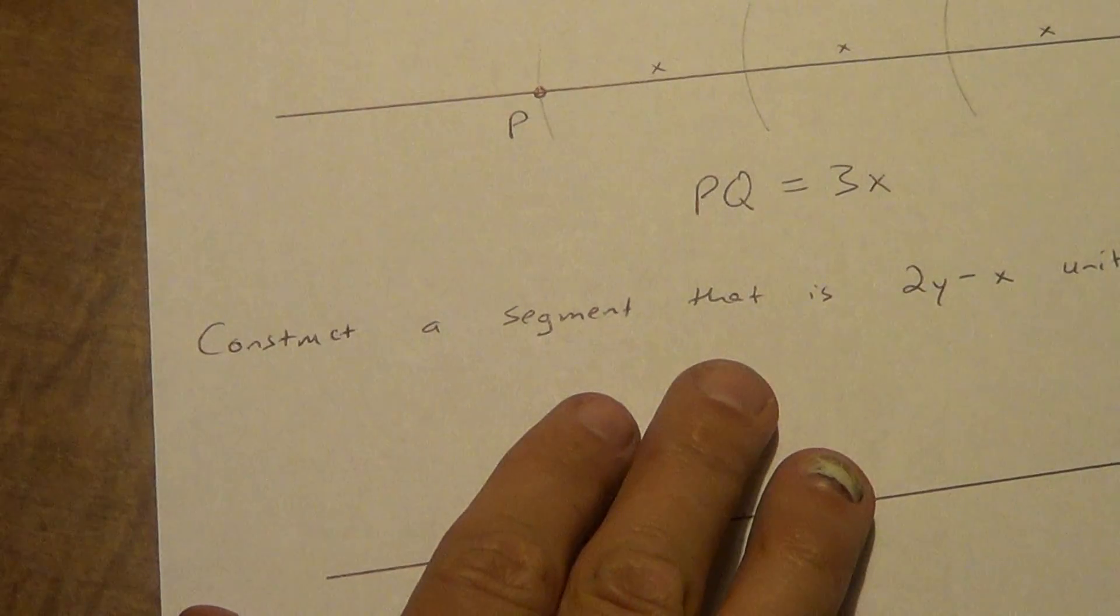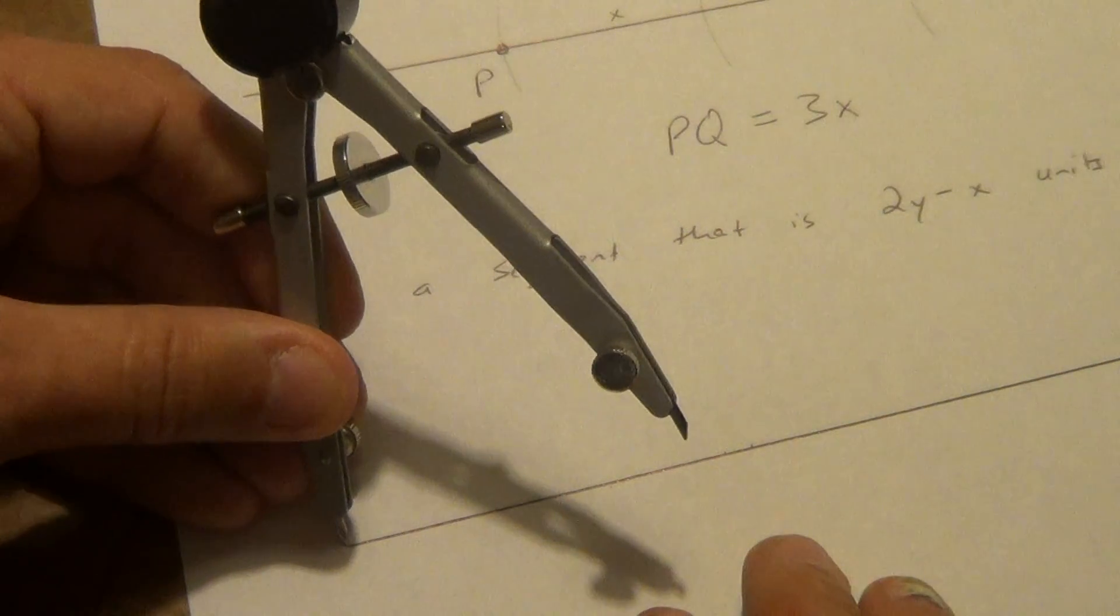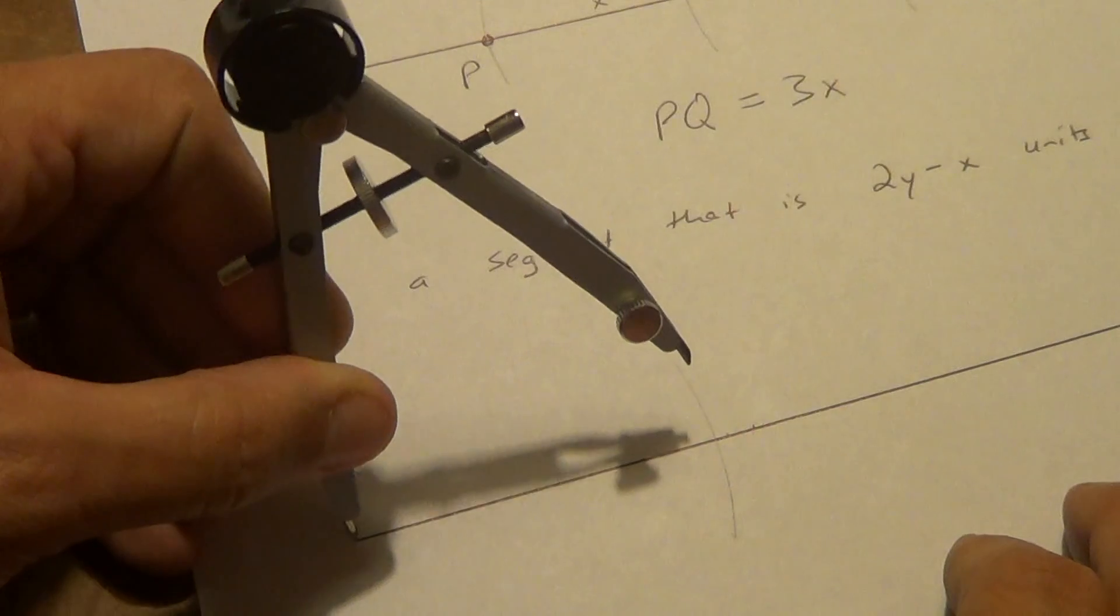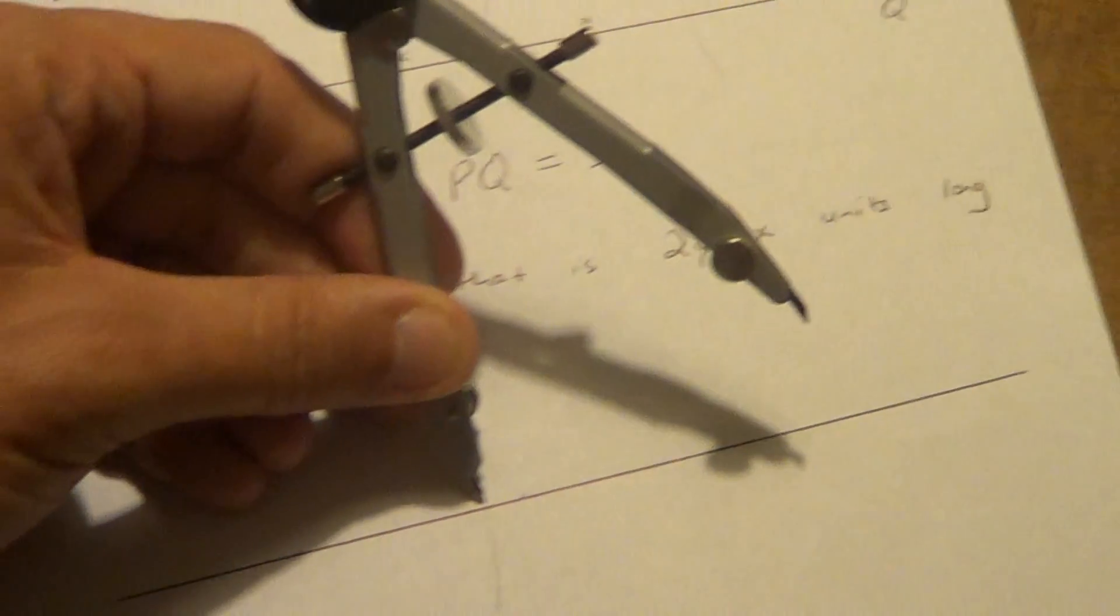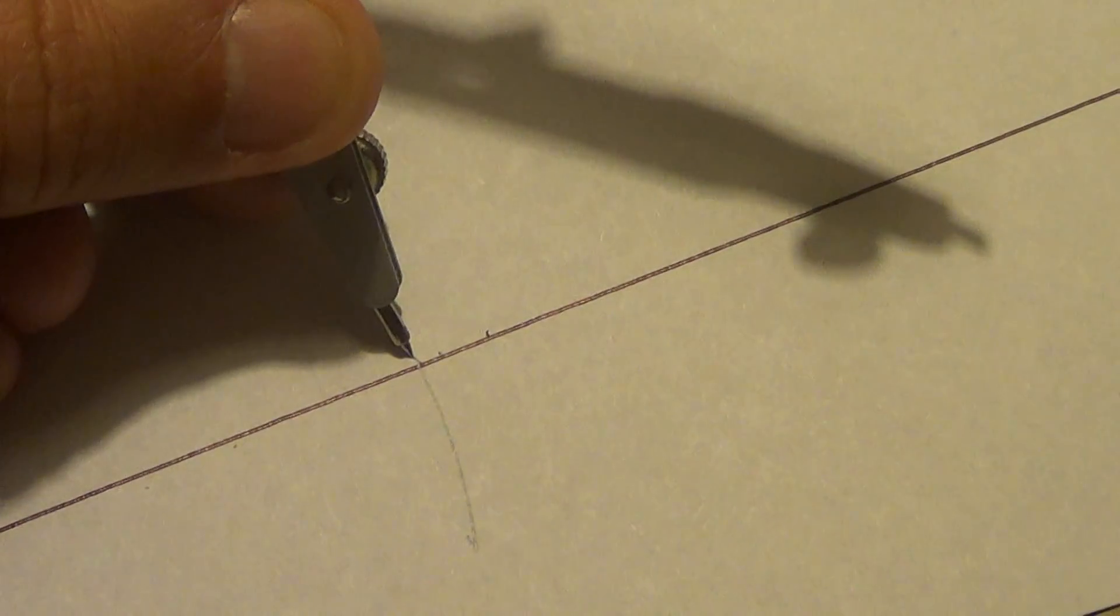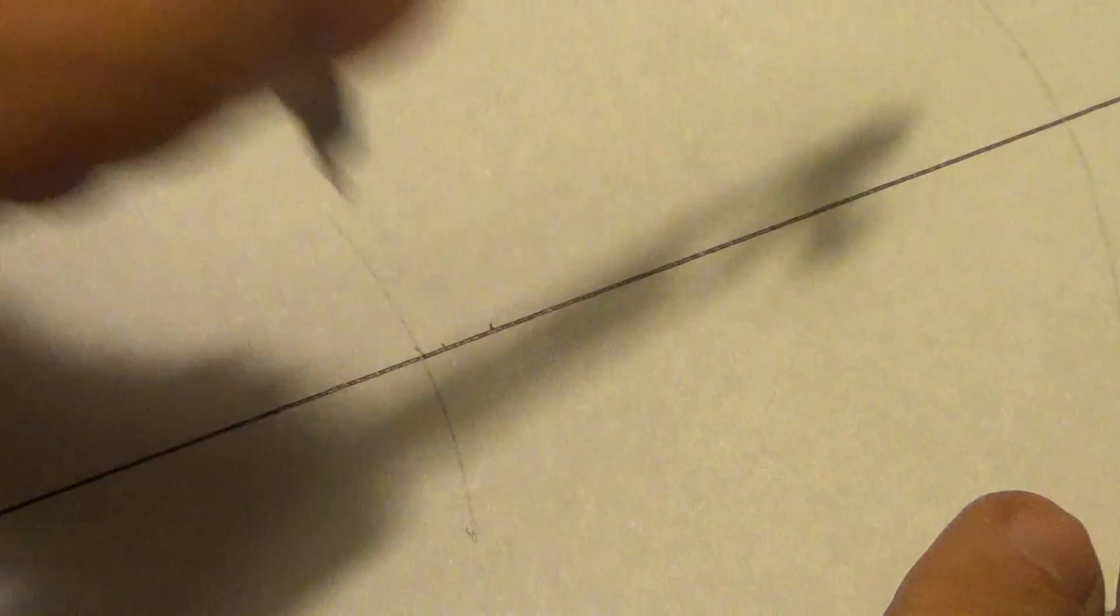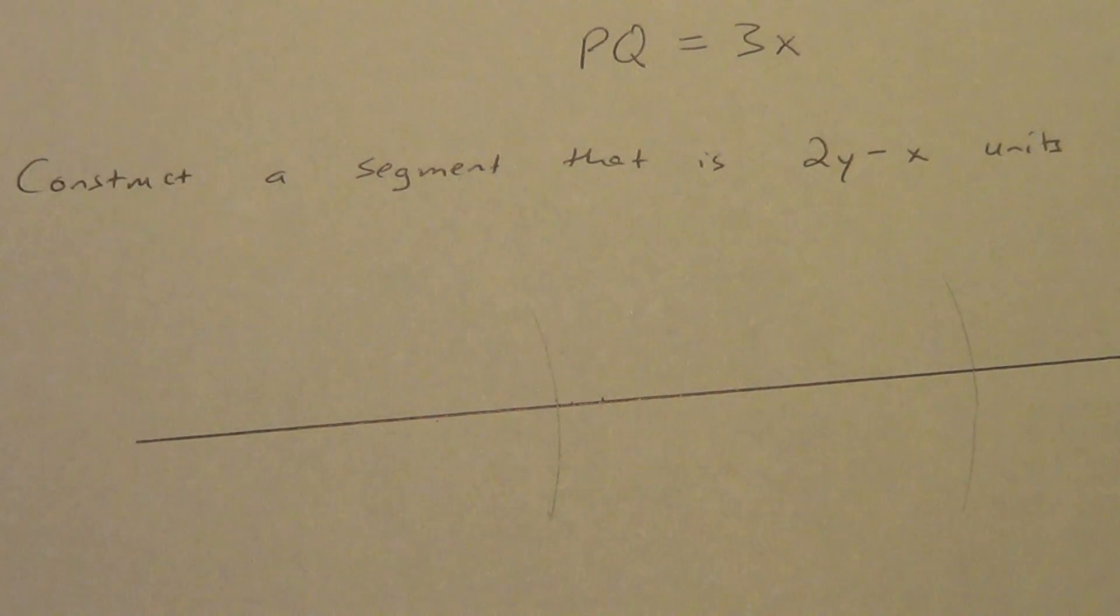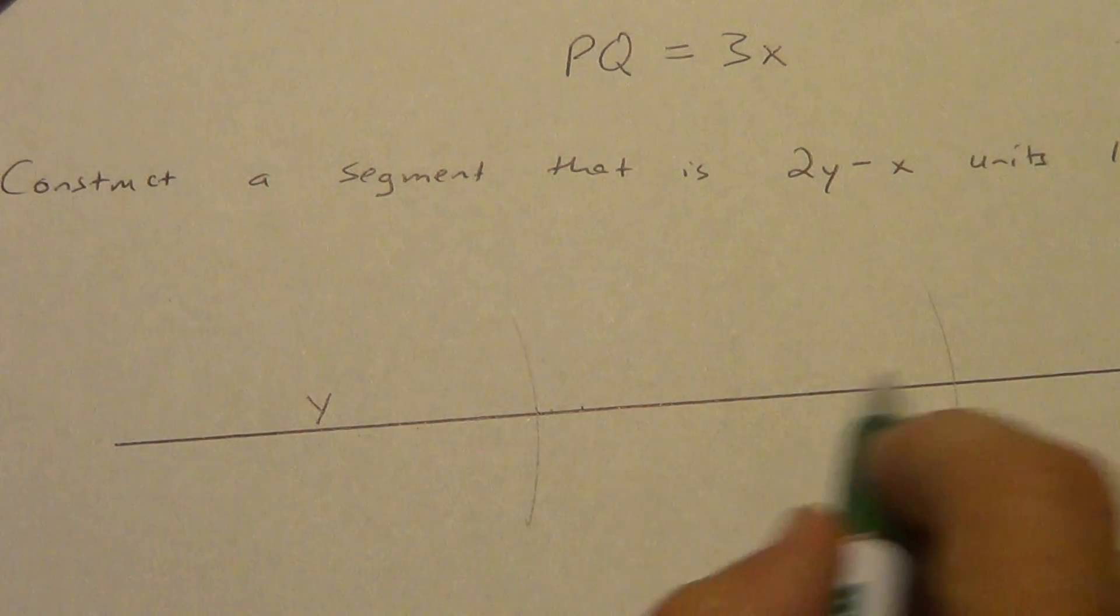Once again, it doesn't matter which end you start at. I'm going to go ahead and start at this end this time, the left end. So I need two Y. Right at the end point. Drag. That's my first Y. From that point of intersection right there, hopefully you can see that little bit of a pencil mark. If not, I'll zoom in a little bit again. See that little bit of a pencil mark? Right there at that point of intersection, I'm going to do my next Y. That's two Y.